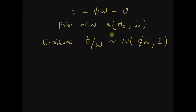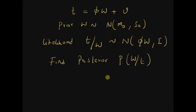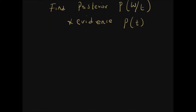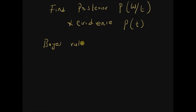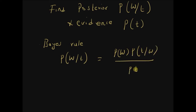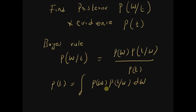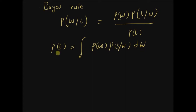Given this information, we want to find the posterior — that is, the probability density function of w given t — and the evidence, which is the probability density function of t. By Bayes' rule, the posterior p(w|t) equals the prior multiplied by the likelihood divided by p(t). And p(t) equals the integral of p(w)·p(t|w) dw, because integrating the joint distribution over w gives the marginal density of t.